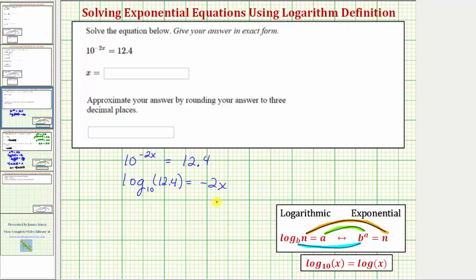And just to double check that we have this correct, if we were to write the log equation as the exponential equation, we start with the base and work around the equal sign to form the exponential equation. 10 raised to the power of negative 2x equals 12.4. So our log equation is correct.